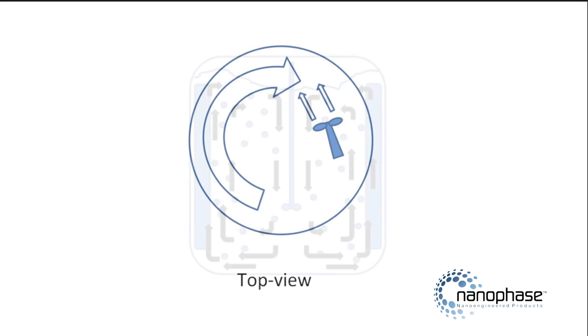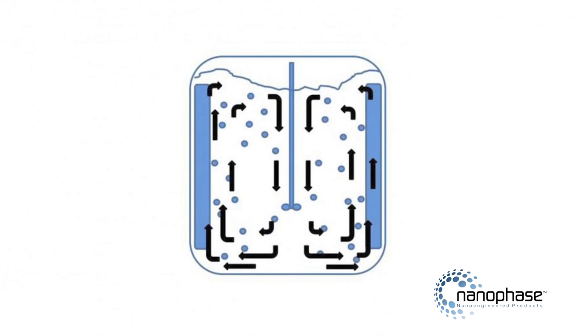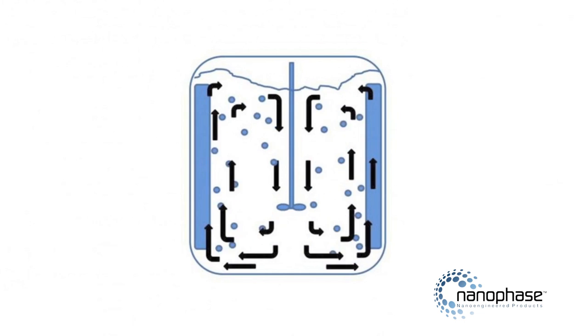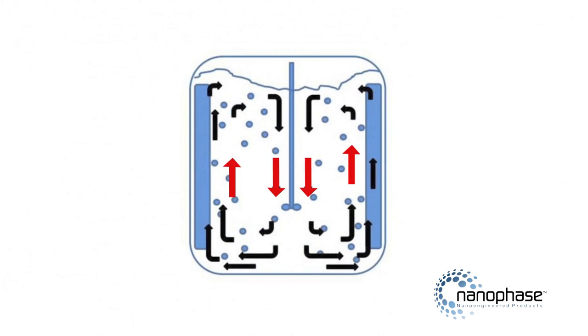One way to overcome the need to precisely locate the mixer is to use baffles. Baffles disrupt the main rotational vortex by blocking rotational fluid flow and converting it to axial flow. This provides a very robust way of promoting good top-to-bottom circulation without vortexing.